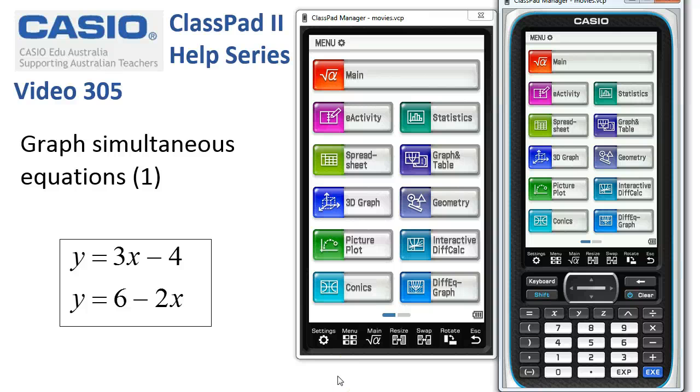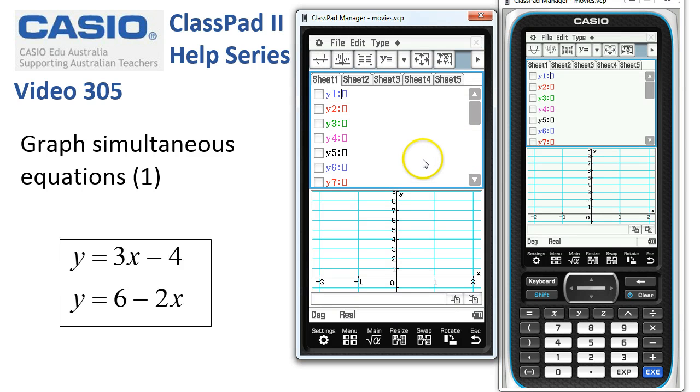Graphing and solving simultaneous equations is the first method we'll look at in graph and table. Come in here and the first job is to enter our two equations. I'm going to use the keyboard: 3x minus 4 for the first equation and tap execute.